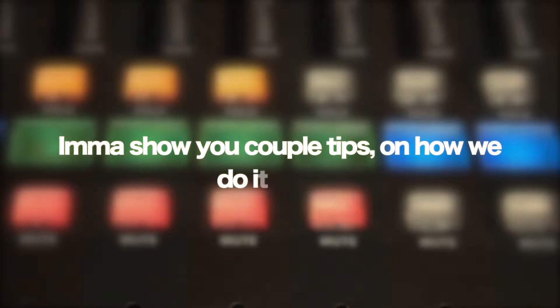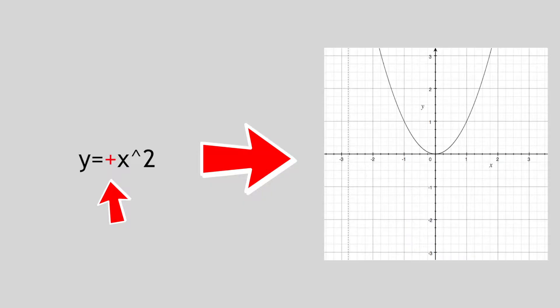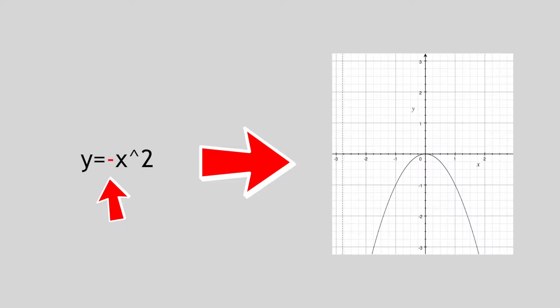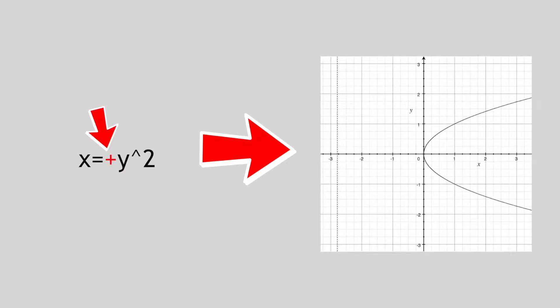I'ma show you a couple tips on how we do it right. Positive on an x squared, that makes it a smile. Make it a negative and it gonna turn down. If you square that y, then it's going to the side. Negative to the left, positive to the right.